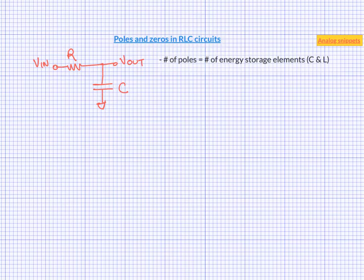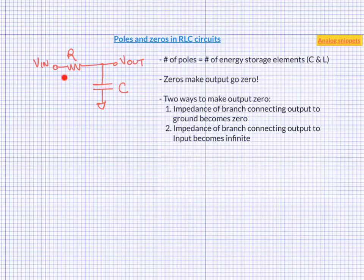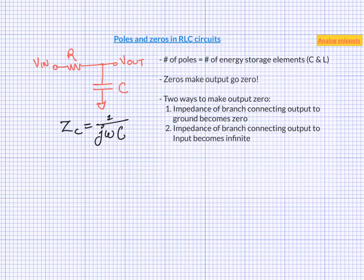How about zeros in the circuits? Zeros are the conditions which make output go zero. So in a circuit such as this, where there are two branches, there are two ways the output can be zero. The first way is that the impedance of the branch which connects output to the ground becomes zero — it's like shorting the output to the ground. The second way is that the impedance of the branch which connects input to the output becomes infinite, cutting the output from the input. In this particular circuit, the branch connecting input to output contains a resistance with fixed impedance, so it cannot go to infinity. The impedance of the other branch is given by 1 over jωC, which reduces with frequency, and at infinite frequency becomes zero — so there is indeed a zero, but at infinite frequency, which is another way of saying there is no zero in this circuit.